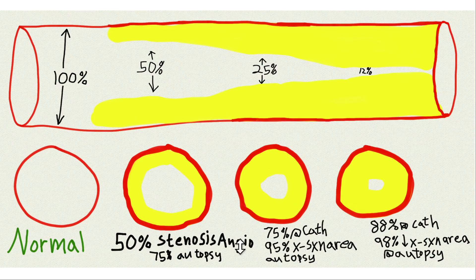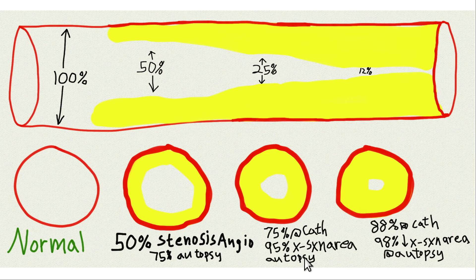A 50% narrowing at cardiac cath corresponded to 75% cross-sectional narrowing at autopsy. A 75% narrowing at cardiac cath corresponded to 95% cross-sectional area narrowing at autopsy. An 88% cardiac cath reading corresponded to 98% narrowing at autopsy — so that's very bad.